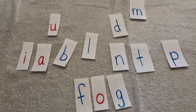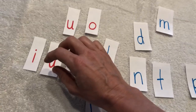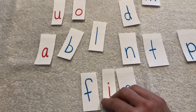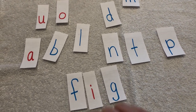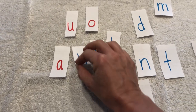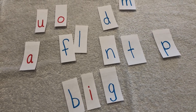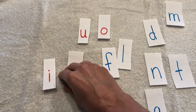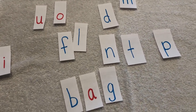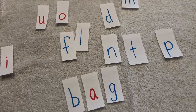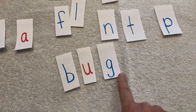If that says fog, make it say fig. F, IG — fig. If that says fig, make it say big. B, IG — big. If that says big, make it say bag. Bag. Last one — that says bag, make it say bug. B, UG. What's my word? Bug.